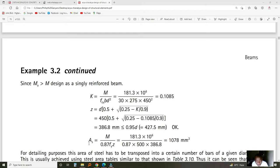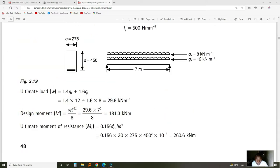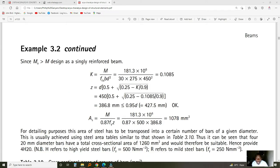The area of reinforcement for the steel going to the bottom: take the design moment, 181.3 kilonewton meters, multiply by 10 to the power 6 to convert to newton millimeters. Divide by 0.87—this is an old BS value. In the latest version, you multiply by 0.95 times FY, the strength of reinforcement which is 500 here, but in the new BS it's 460. Multiply with the Z value and you get the required area of reinforcement of 1078 mm².